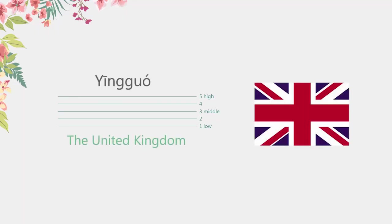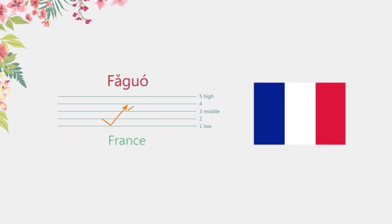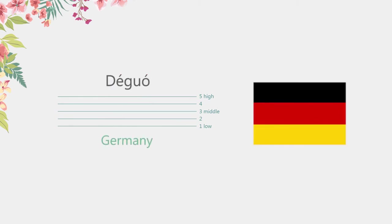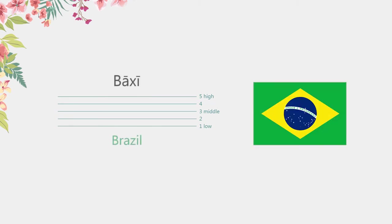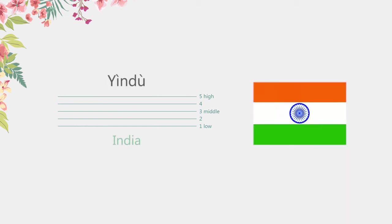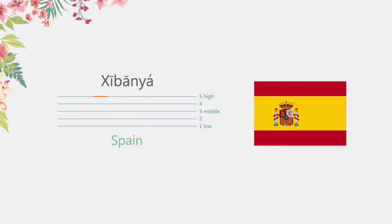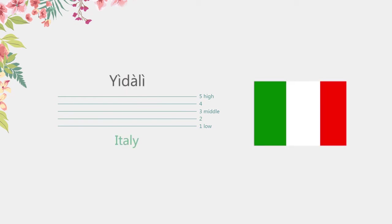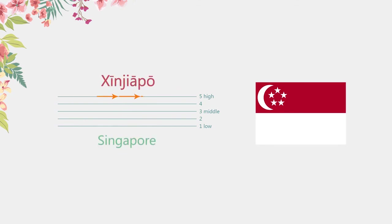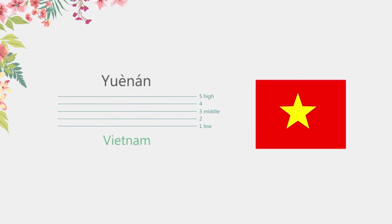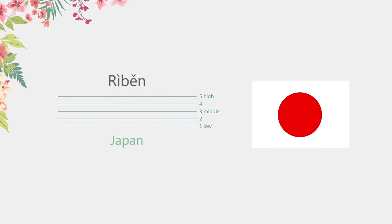Additional country vocabulary: The United Kingdom is 英國. France is 法國. Germany is 德國. Brazil is 巴西. India is 印度. Canada is 加拿大. Spain is 西班牙. Italy is 意大利. Singapore is 新加坡. Vietnam is 越南. Japan is 日本。